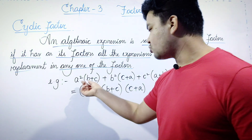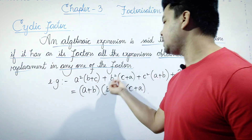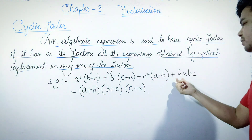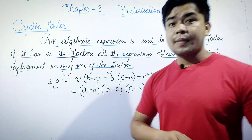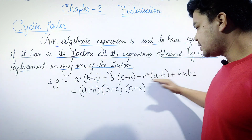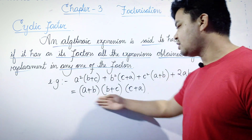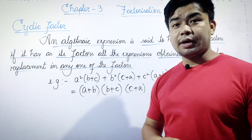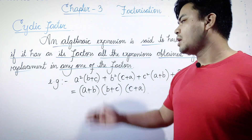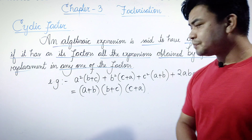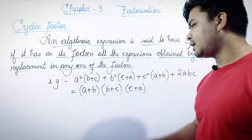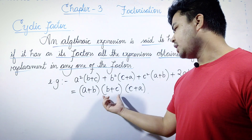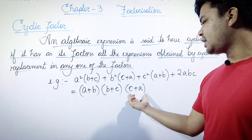We will have: a squared times (b plus c), plus b squared times (c plus a), plus c squared times (a plus b), plus twice abc. For example, (a plus b) times (b plus c) times (c plus a).